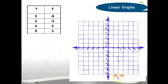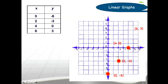The first point is zero and negative six, so let's plot that — zero on X and negative six on the Y axis. The next point is two and negative three: find two in X, then negative three in Y. The third point is four and zero: find four in X and the Y is zero, so it doesn't move up. The last point from our table is six and three — go to six on X and three on Y.